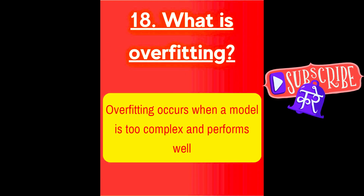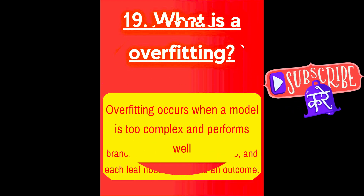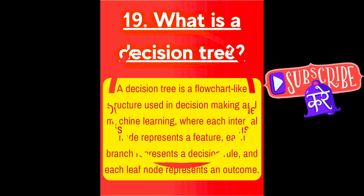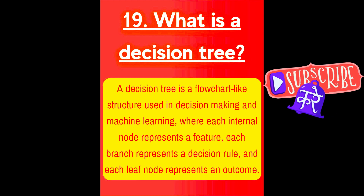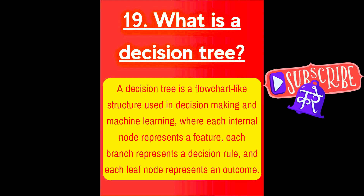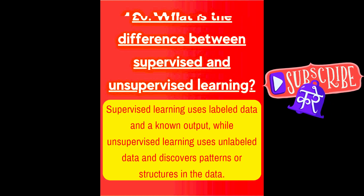Next question is, what is overfitting? Overfitting occurs when a model is too complex and performs well on training data but poorly on new data. Next question is, what is a decision tree? A decision tree is a flowchart-like structure used in decision-making and machine learning, where each internal node represents a feature, each branch represents a decision rule, and each leaf node represents an outcome.